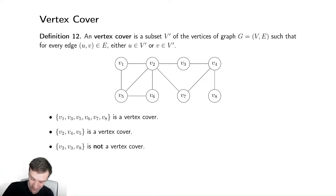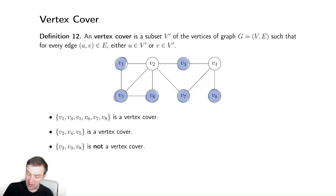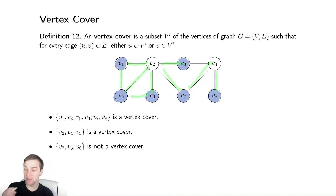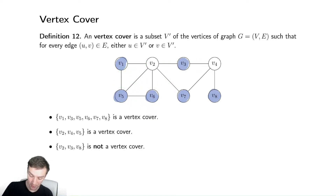Let's look at some easier ones. Let's look at V1, V3, V5, V6, V7, and V8. I need to check every single edge — each one is touching a blue vertex. Every single edge is touching a blue vertex, therefore this is a vertex cover. I need that every single edge touches at least one blue vertex. It can touch multiple — notice that this edge touches multiple, and this edge touches multiple.